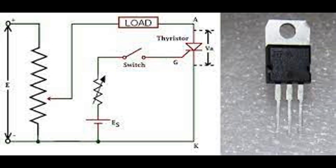Basic States of Operation — Forward blocking mode (off state). When a positive voltage is applied to the anode with respect to the cathode, the J1 and J3 junctions are forward biased, but the J2 junction (middle PN junction) is reverse biased. In this state, the thyristor blocks current flow, acting as an open switch.